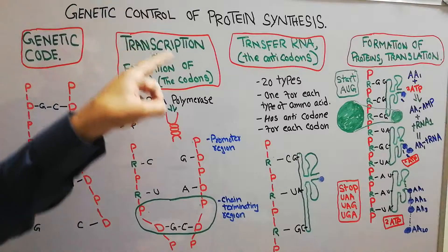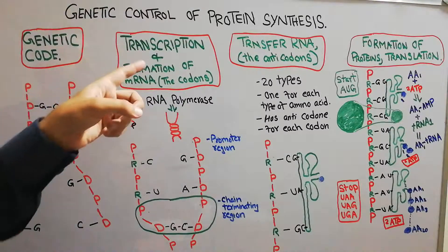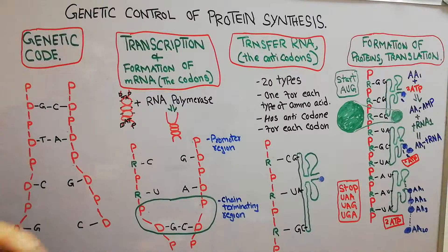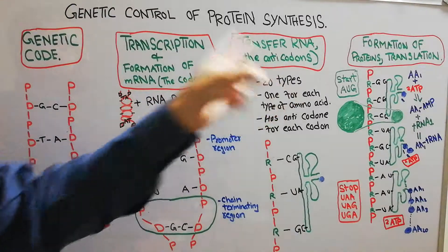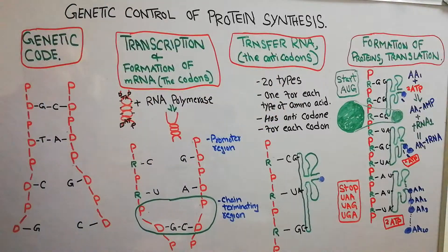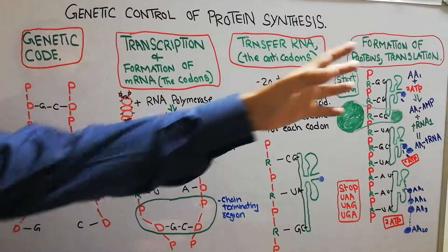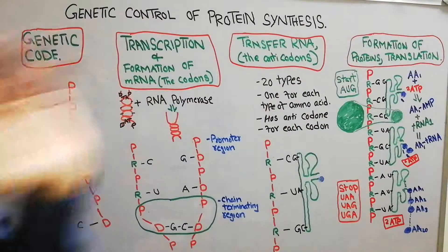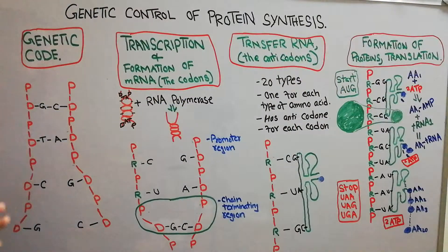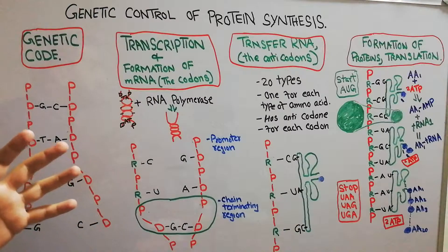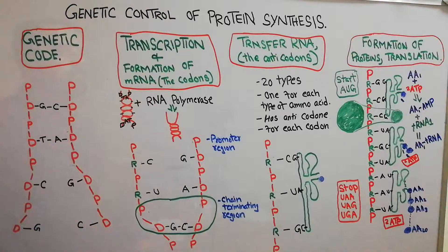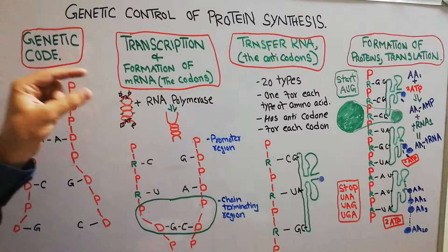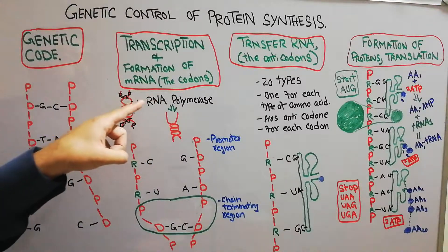There are three important steps in protein synthesis. First is transcription, or formation of the messenger RNA. Then we have the transfer RNA and the anticodons. And finally we have translation, or the formation of the proteins.